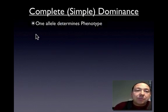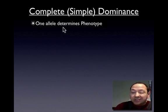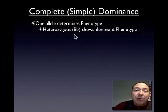Simple dominance means that one allele is going to determine the phenotype or what the organism looks like. The heterozygous is going to show the dominant phenotype.